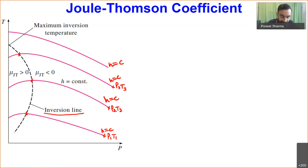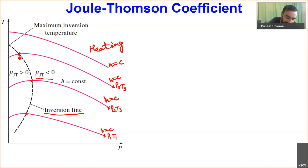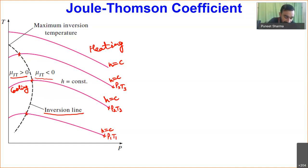On the right-hand side of the inversion line, the Joule-Thompson coefficient is negative, so we have heating of the working medium upon expansion. On the left-hand side, the Joule-Thompson coefficient is greater than zero, so we have cooling of the working substance. This is the region where we must operate our refrigerants — while doing throttling in case of refrigerant, we have to operate in this cooling region.